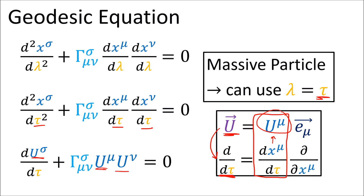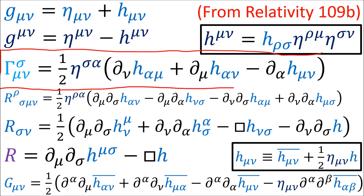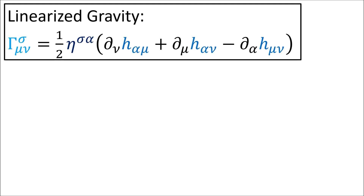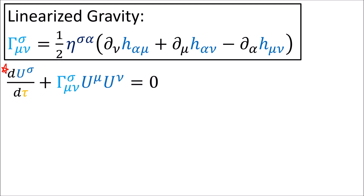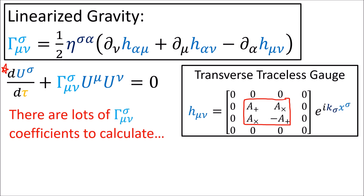What we need now is to calculate the connection coefficients. If you recall from Relativity 109b, we calculated a formula for the connection coefficients in linearized gravity, which uses the inverse flat metric eta here and the derivatives of the h perturbation here. Geodesic world lines come from the solutions to the geodesic equation. Given this formula, and knowing that the h components are plane waves in the plus and cross polarizations, even though many of these h components are zero, there are still lots of connection coefficients to calculate, and the geodesic equation can get pretty complicated.